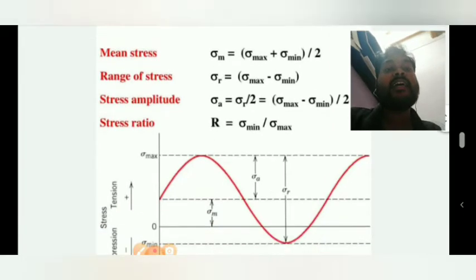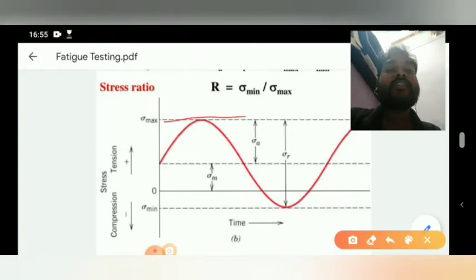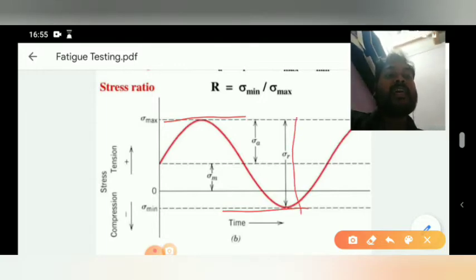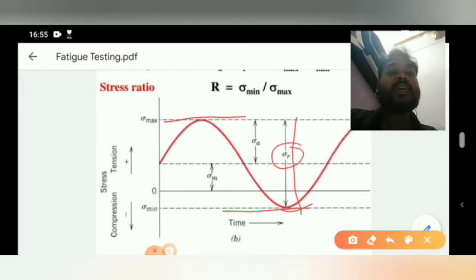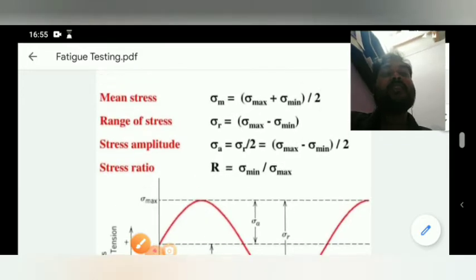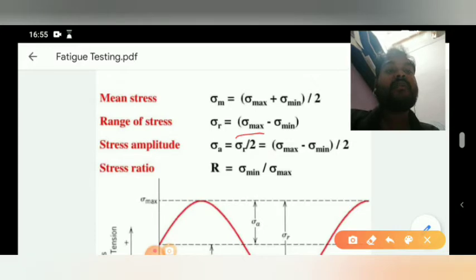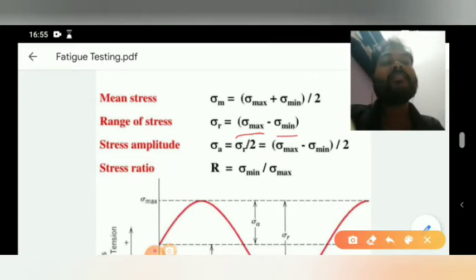Range of stress: the range covers from maximum to minimum. The total area from maximum to minimum is called the range of stress, denoted sigma_r. Range of stress is calculated as sigma max minus sigma min.